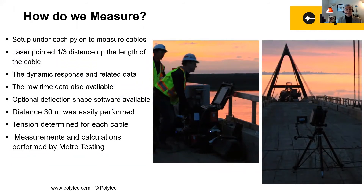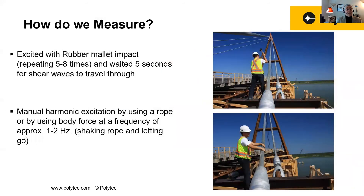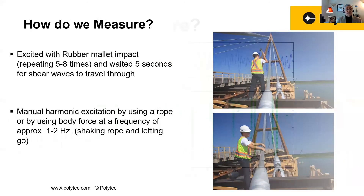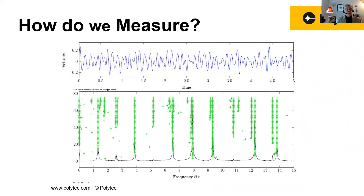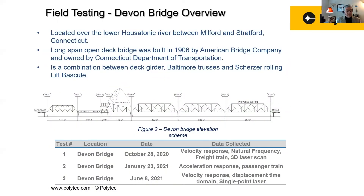The measurements are done remotely, at about one-third of the distance, and the part is excited either by a hammer or by a technician moving the cable directly. We acquire those measurements and the information is stored and compared with the expected values. That way, it's possible to see if the maintenance on those bridges and cables is correct. Professor Mala has also done work in bridges, and you can find his work on the TIDC website.